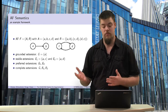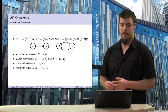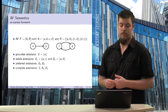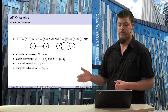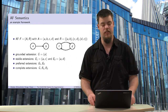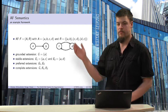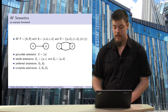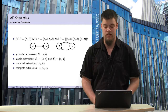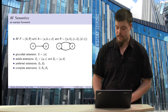Those three are the only complete extensions for this argumentation framework. Therefore, we can also find the grounded extension, which is {A}, because it is the subset-minimal complete extension. The preferred extensions are the other two — {A,C} and {A,D}. The stable extensions are, in this case, the same as the preferred extensions.